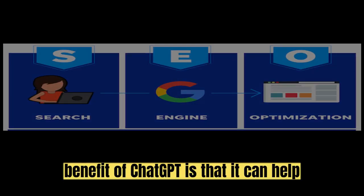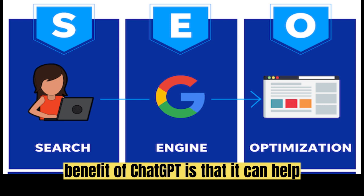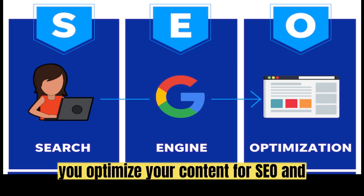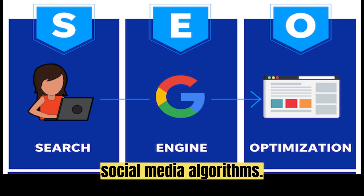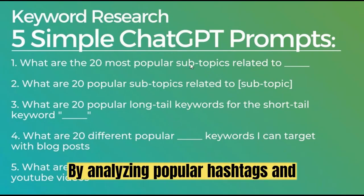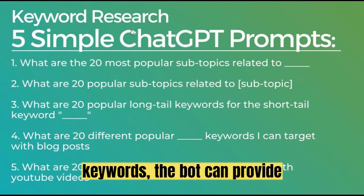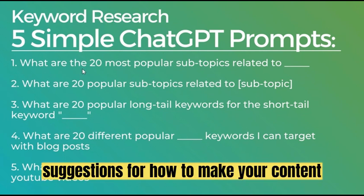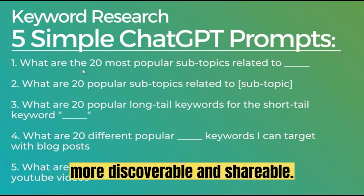Another benefit of ChatGPT is that it can help you optimize your content for SEO and social media algorithms. By analyzing popular hashtags and keywords, the bot can provide suggestions for how to make your content more discoverable and shareable.